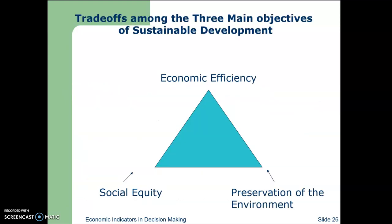Sustainable development has a three-pronged definition: there must be economic efficiency, social equity, and preservation of the environment. Traditional economic growth does not take into account all three of these aspects or pillars of sustainable development.